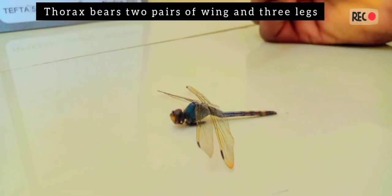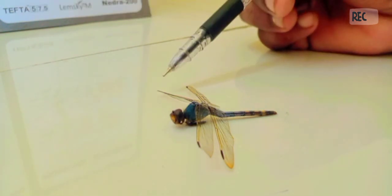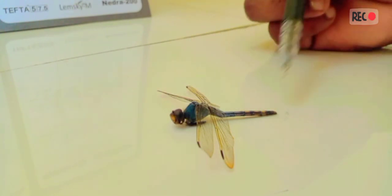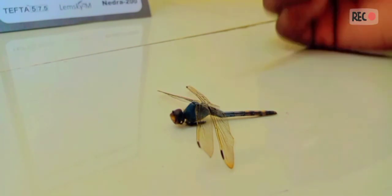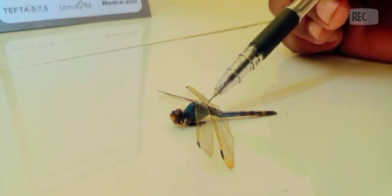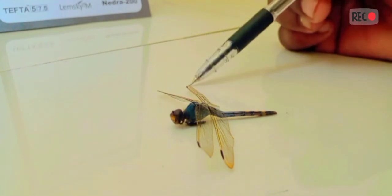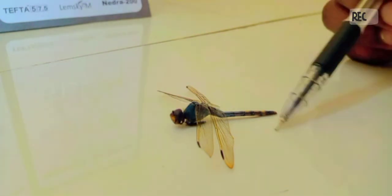The leading edge of each wing has a node where the other wings join. The legs, which point downwards, are used for catching prey, walking, and holding onto trees.